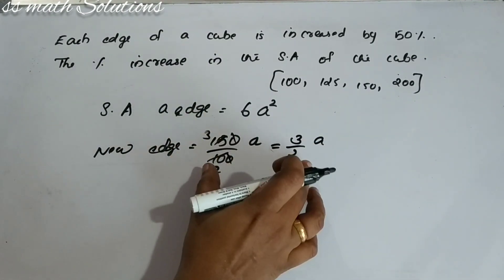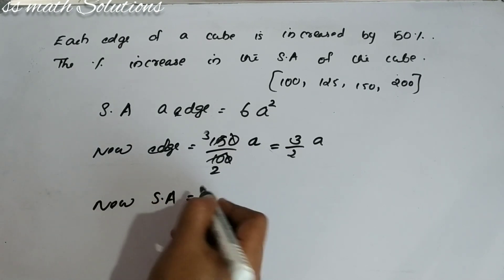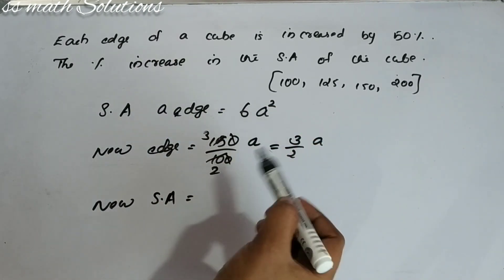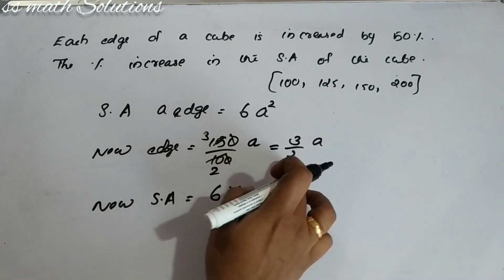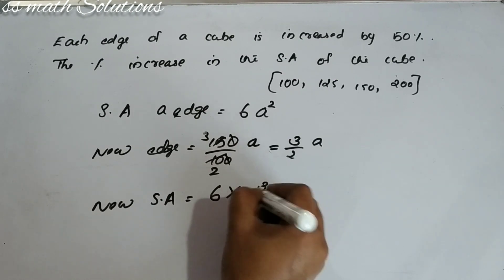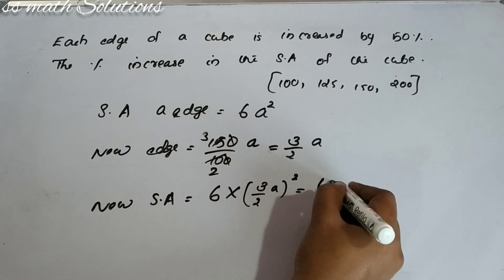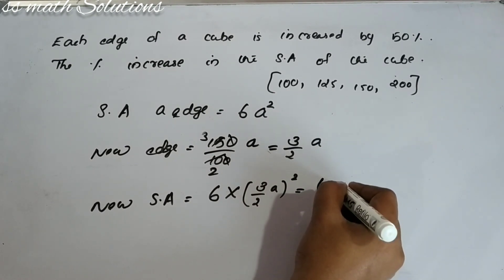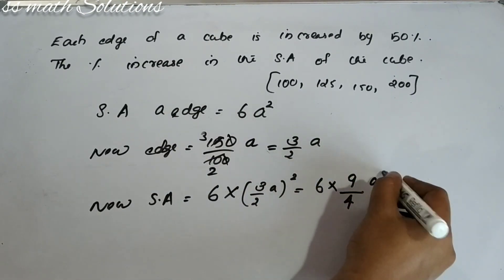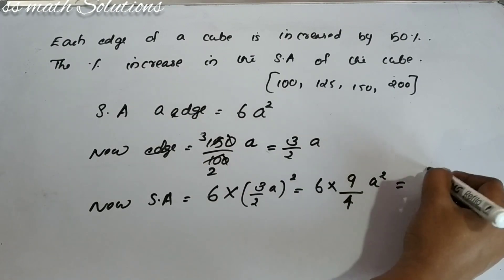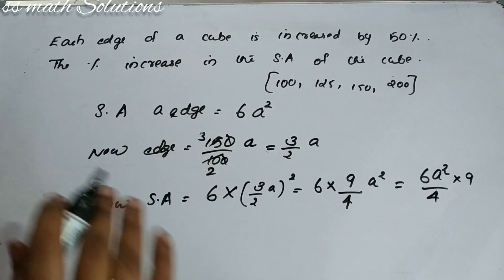With the new edge, we can find the new surface area. After increasing the edge by 50%, the new surface area is 6 times the new edge squared: 6 · (3/2 · A)². That gives 6 · (9/4) · A², which we write as 6A² · 9/4.